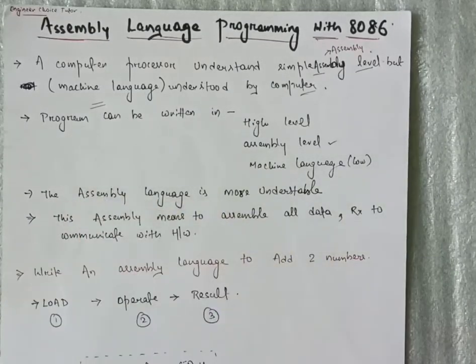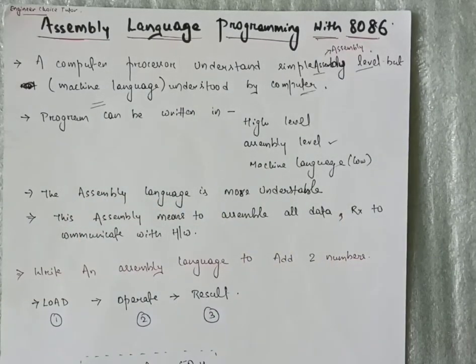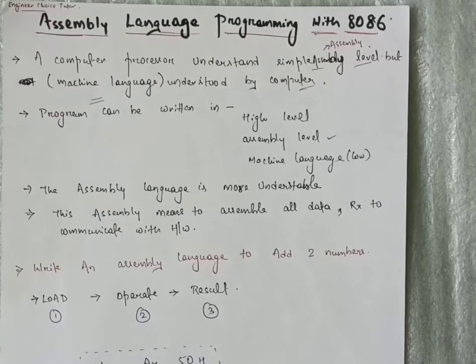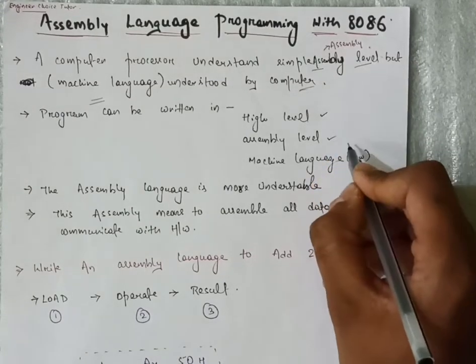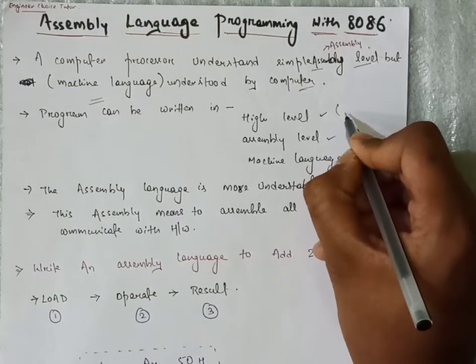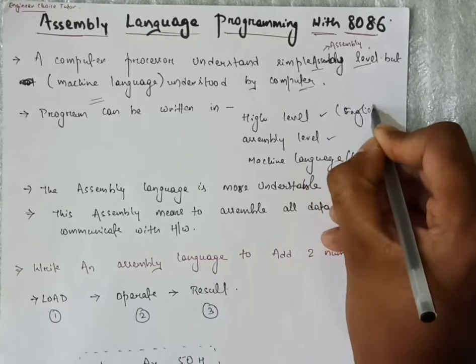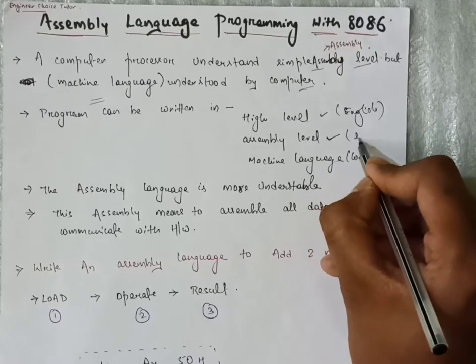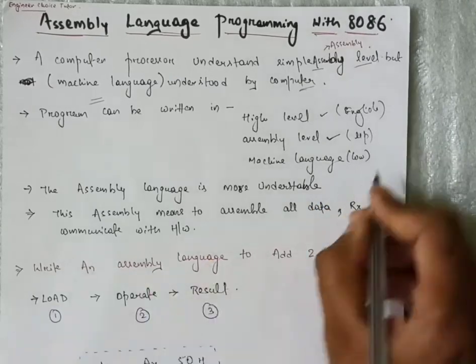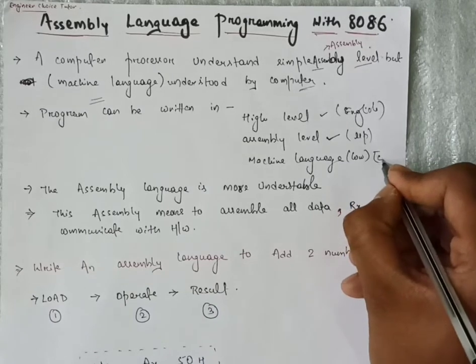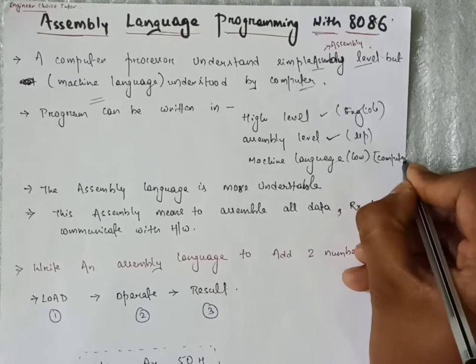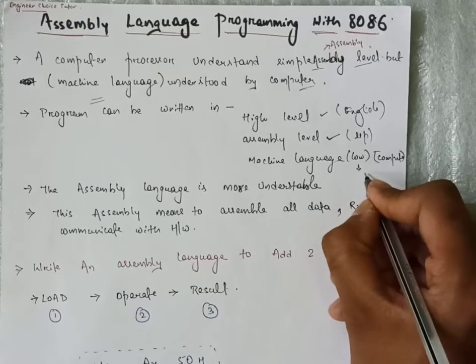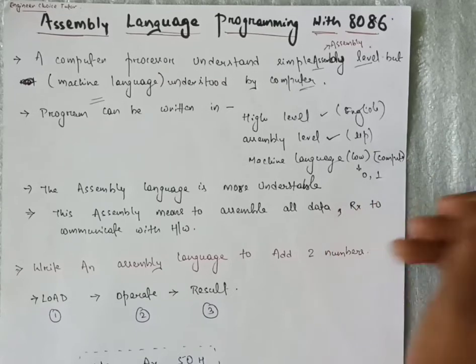A program, whatever program we are writing, can be written in three types of levels. First is high level that we can understand, that is English. Assembly level language is understood by microprocessor or controller, and machine language is only understood by computer or machine. This machine language is in the form of binary, that is 0 or 1.